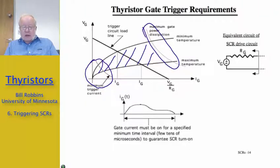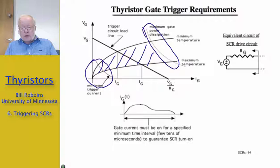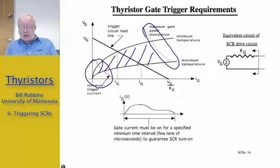That's about as far as we will cover the discussion of thyristor operation. The next subject we are going to take up is gate turn-off thyristors, which are a modification of the basic thyristor that enables the gate to turn the thyristor off. Thank you for your attention.